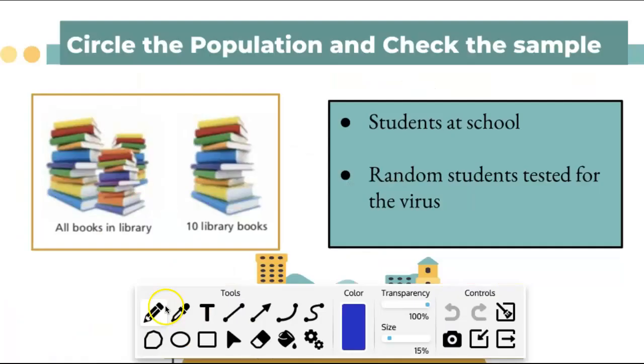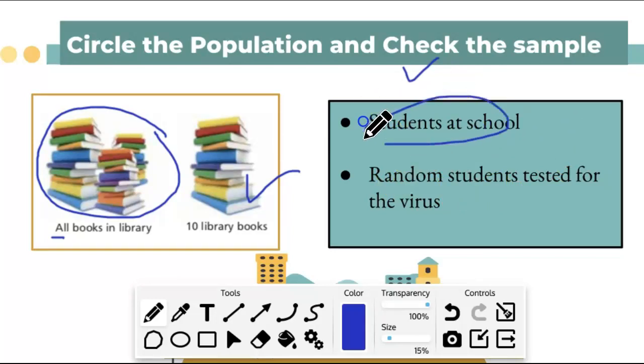Let's look at our next example. So in this example it says circle the population and check the sample. So here all the books in the library and 10 library books. So obviously the word 'all' is one of the keywords that we have to make it the population, so we circle the population in this case and check the sample. All right, so students at the school and random students tested for the virus. So definitely the population will be the students at a school, and since it says the word random, that will be our sample.